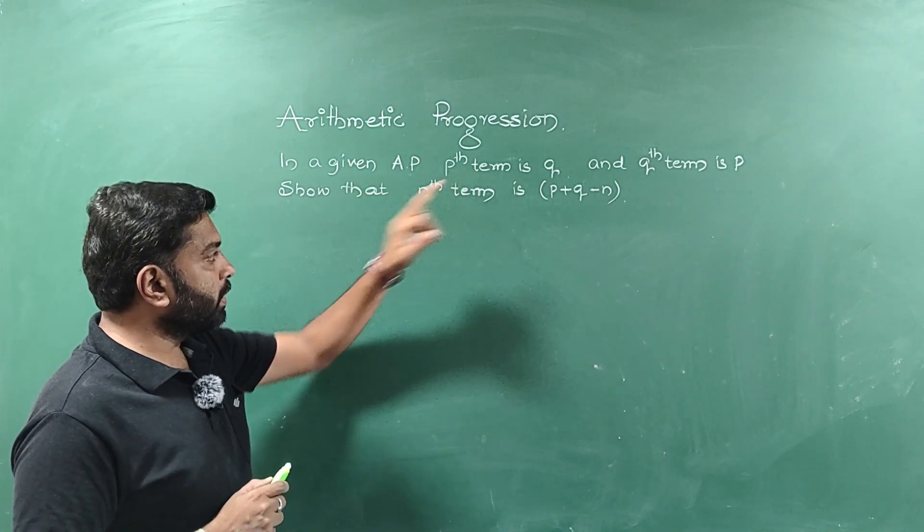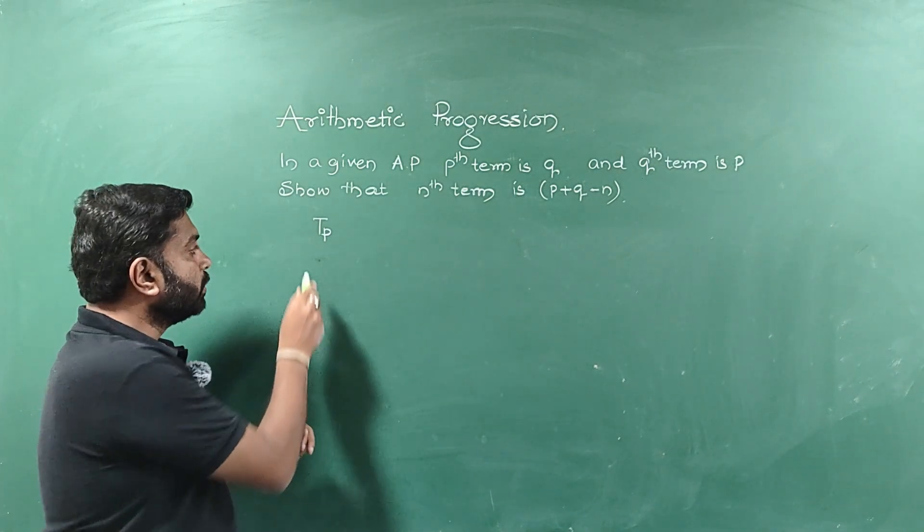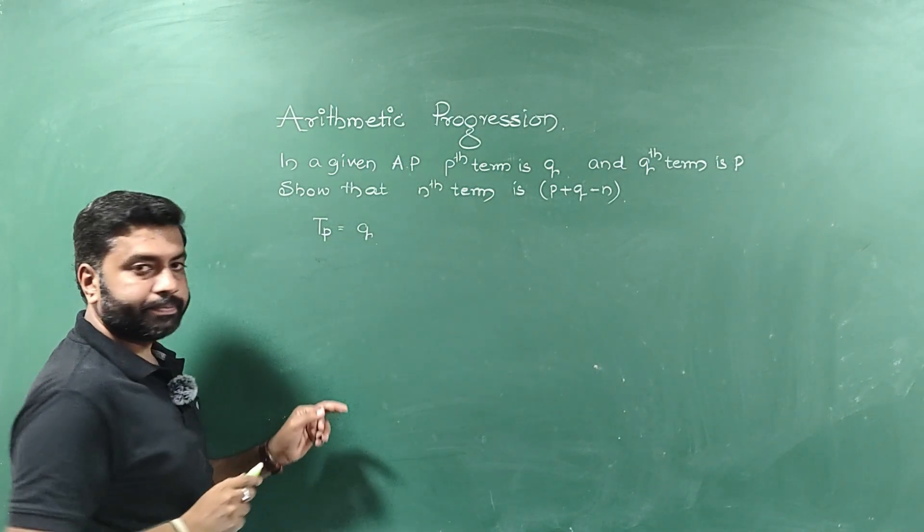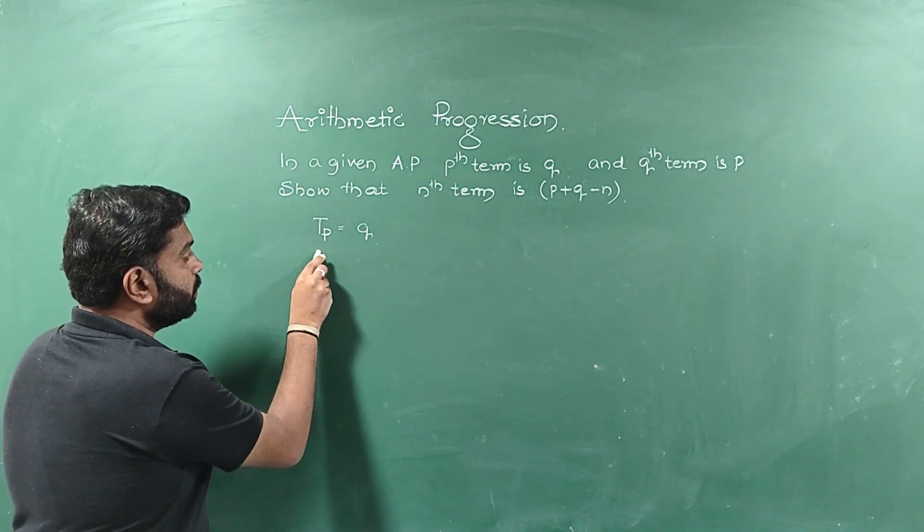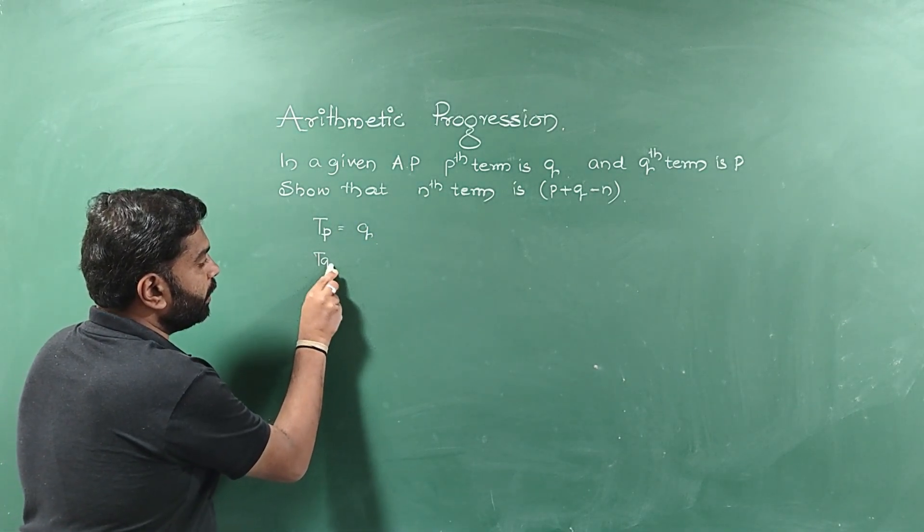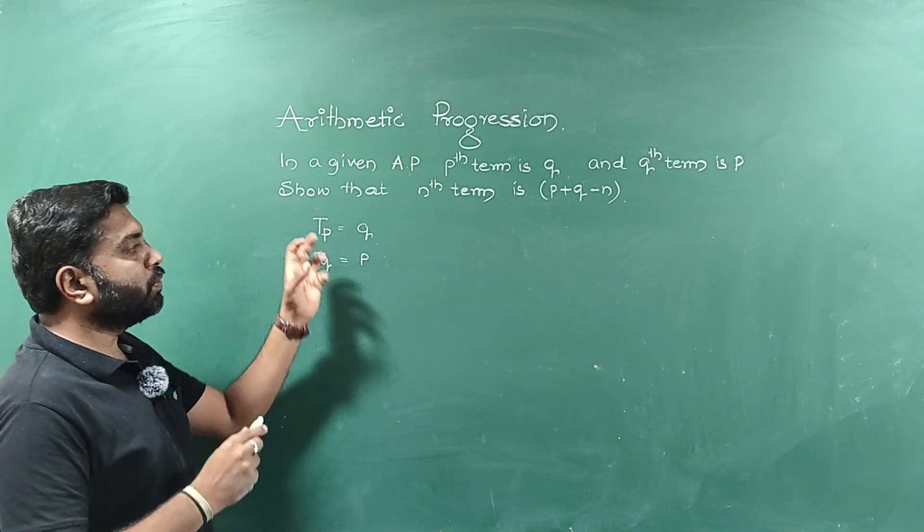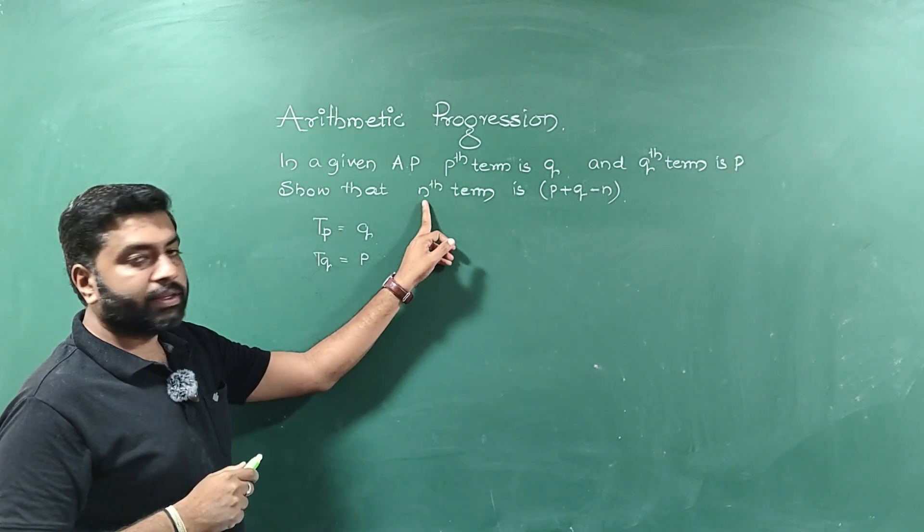So Pth term is Q means Pth term I can write Tp. Pth term is Q. Next, Qth term is P. Qth term means Tq. Tq is equal to P. So using these two, I want to frame the equation. Later, I am going to find the nth term.